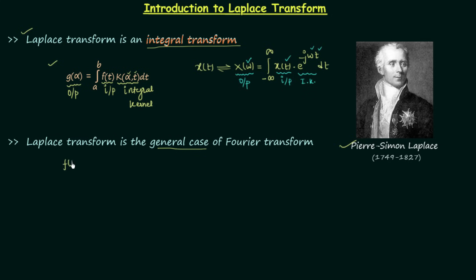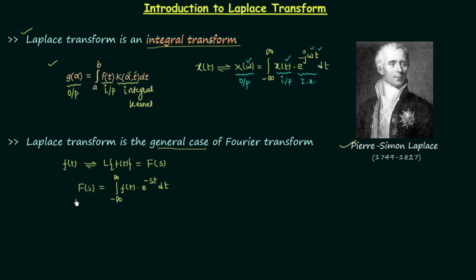Let's say there is a time domain signal f(t) and its corresponding Laplace transform is represented by capital F(s). So F(s), which is the Laplace transform, is equal to integration from minus infinity to infinity of the time domain signal f(t) multiplied by e to the power minus st, dt. Comparing with the general integral transform: F(s) is the output and it is the function of variable s; f(t) is the input and it is the function of t; and e to the power minus st is the integral kernel and it is the function of both s and t.